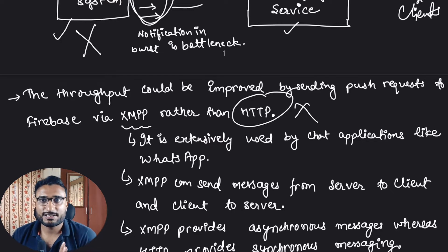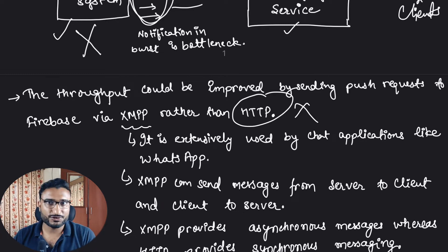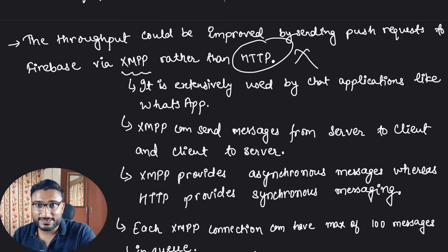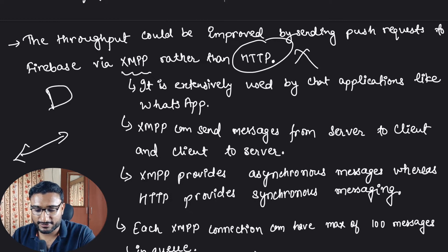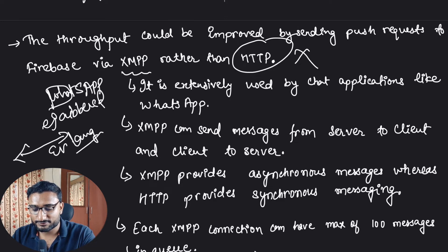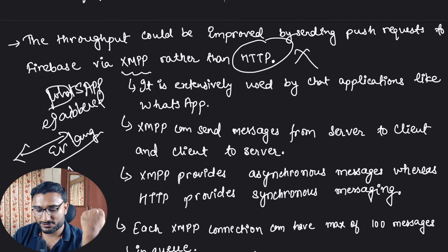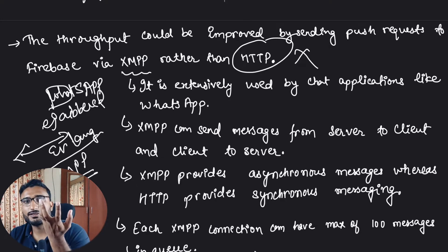If we move to XMPP, our use case will be solved. XMPP is mostly used in establishing bi-directional connections and is mostly used in chat applications — for example, WhatsApp. WhatsApp's server is built on Ejabberd, a framework written in Erlang, and it uses XMPP connections in the backend. So you can assume that it can work at scale.